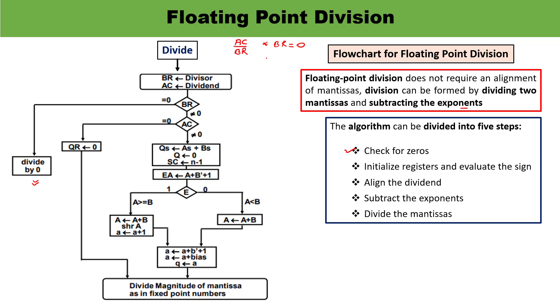Second condition: what will happen if AC is zero while BR is non-zero. AC is zero, BR is non-zero. It means now the result which you are getting, quotient, will be zero. Zero upon something will be equal to zero. In this particular case, quotient is equal to zero.